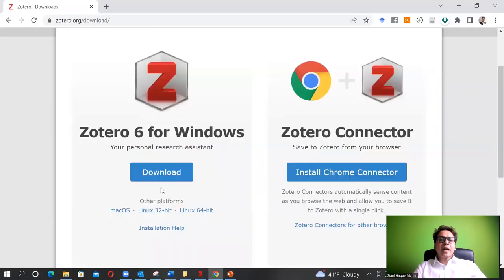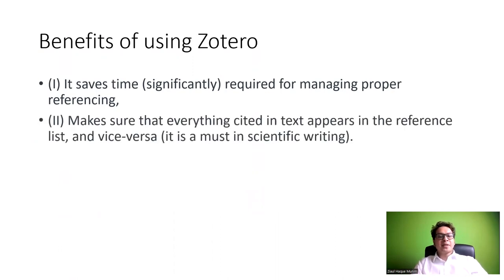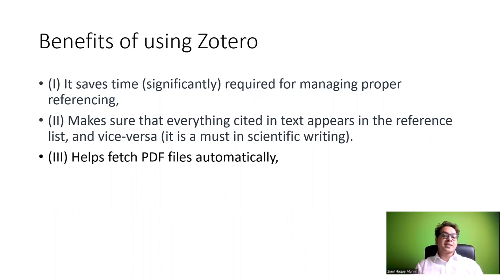Before going into detail, let me walk you through the benefits of Zotero. I will present about six benefits. The first one is that it saves time significantly when managing proper referencing practices. Secondly, it makes sure that everything you cited in the text appears in the reference list and vice versa, which is a must in scientific writing.